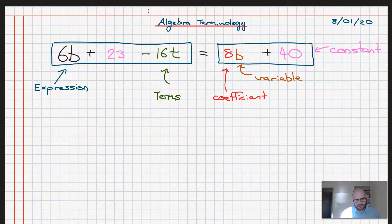So on the right hand side here, the term that's made up of the coefficient and variable is the 8b. Similarly, on the left hand side, we have the 6b, where our 6 is our coefficient and our b is our variable. So in this case, the minus 16 is our coefficient. So minus 16 is the coefficient and the t is the variable.